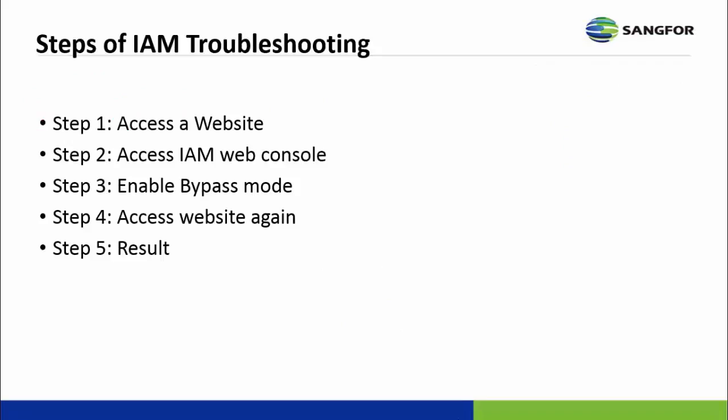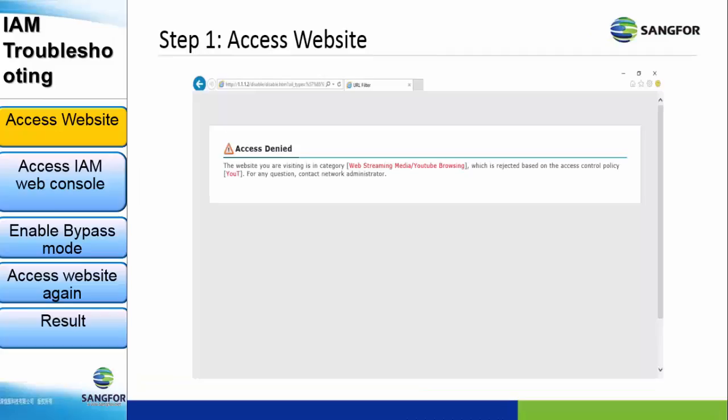These are the IAM troubleshooting steps. Step 1: access a website. Step 2: access the IAM web console. Step 3: enable bypass mode, then access the website again and see the result. In our example, we access youtube.com — we can see it is already blocked by IAM and this is the error page.